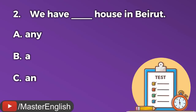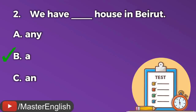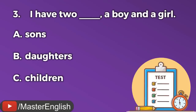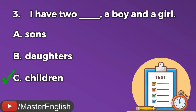Question number two. We have ___ house in Beirut. A: Any. B: A. C: An. The correct answer is B: A. We have a house in Beirut. Question number three. I have two ___ — a boy and a girl. A: Sons. B: Daughters. C: Children. The correct answer is C: Children.